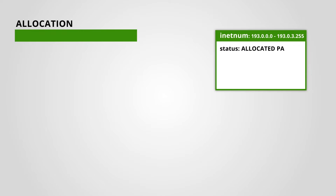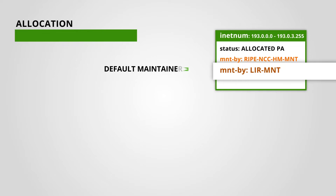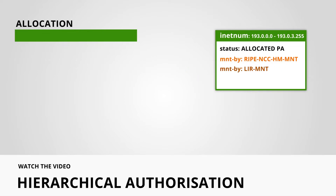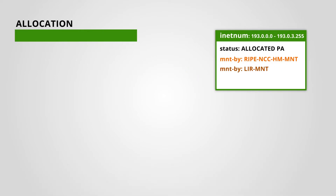If you look at the inetnum object that represents your allocation in the RIPE database, you can see that your maintainer is listed as MaintainedBy. As we've seen in the video Hierarchical Authorization, this means that you can partially update the object. You can also create inetnum objects for smaller ranges within your allocation.